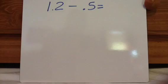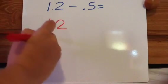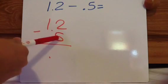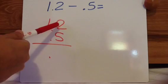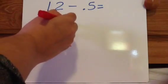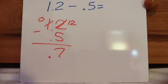Okay, so 1.2 minus 0.5. Line them up. Go ahead and set your decimal down. Now remember, you can't do 2 minus 5, so you have to borrow. So that becomes a 0 and that becomes a 12. 12, 11, 10, 9, 8, 7, .7 is my answer.